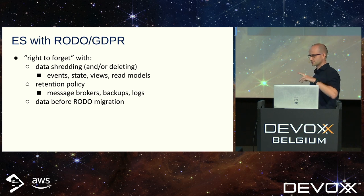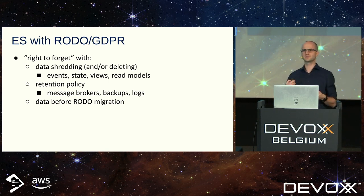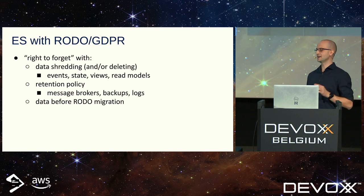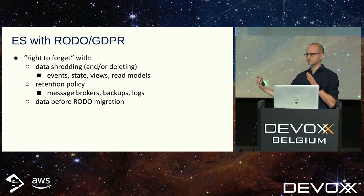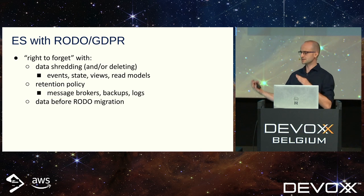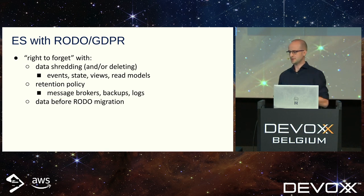Event sourcing versus GDPR: your application should give users the right to be forgotten. How do you do this with event sourcing where you cannot delete events? Actually, you can — but you should avoid it. The technique is called data shredding: you encode sensitive information with an encoding key, and if you need to delete user data, you just delete the user's key. Sounds easy, but managing those keys is quite painful — not to mention you need to remember retention policies of your message brokers, backups, logs, and data before GDPR migration.